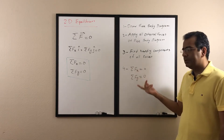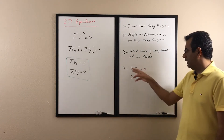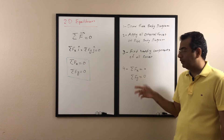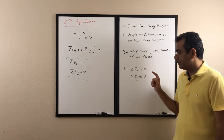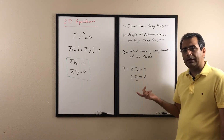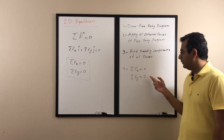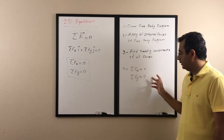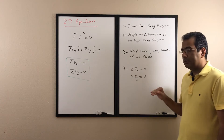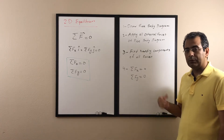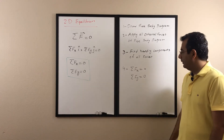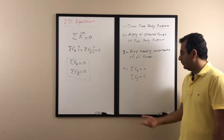At the end, we write all forces in the x direction, add them together and set them to zero, then do the same for the y direction. This gives us two equations and most of the time two unknowns. Sometimes one equation is enough; sometimes you solve both simultaneously. Your calculator can handle two equations with two unknowns, or even three equations with three unknowns, quite straightforwardly.